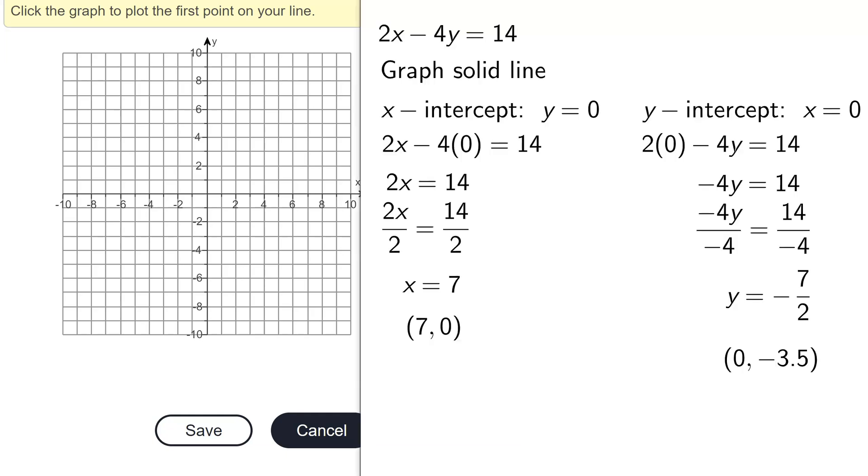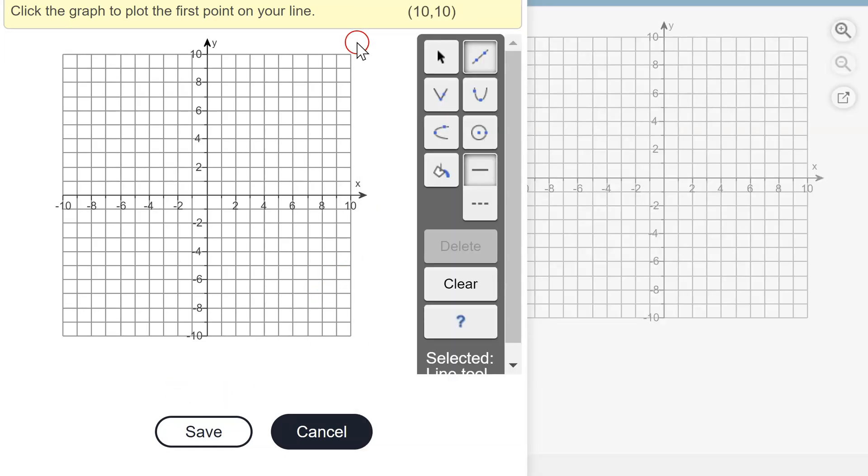So reviewing, my x-intercept was 7, 0. So looking at my graph, notice as I move my cursor around, the coordinates up here change. So I need the point starting at the origin 7, 0 is over here. So there is my x-intercept.